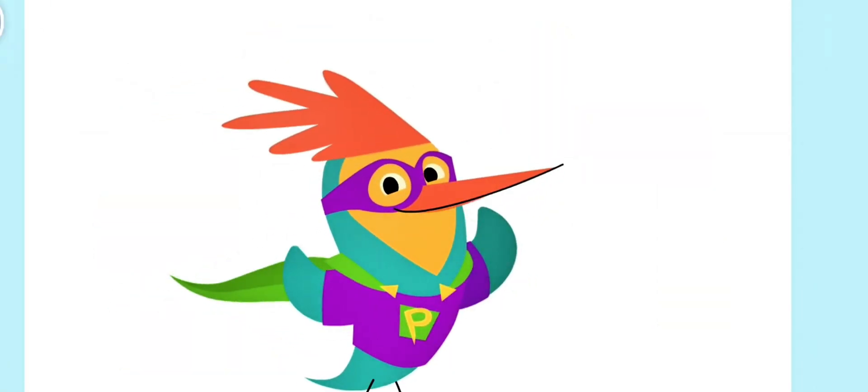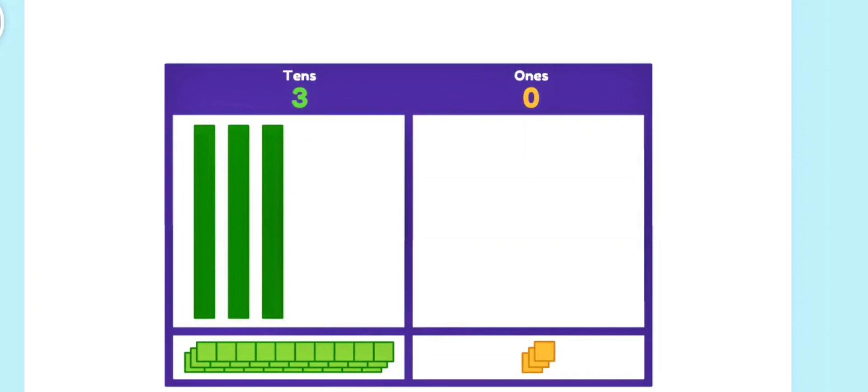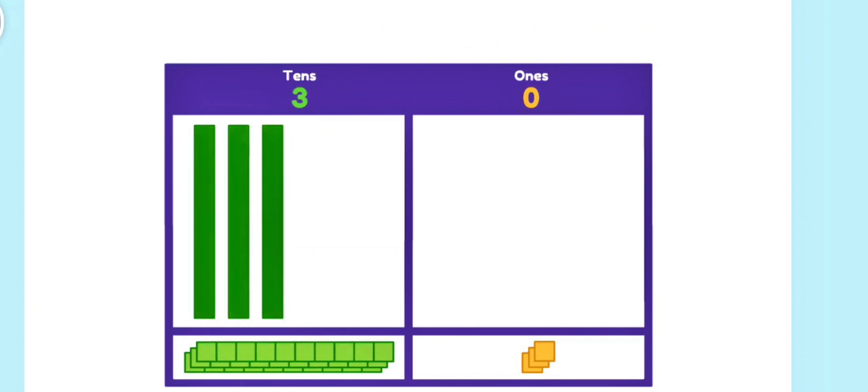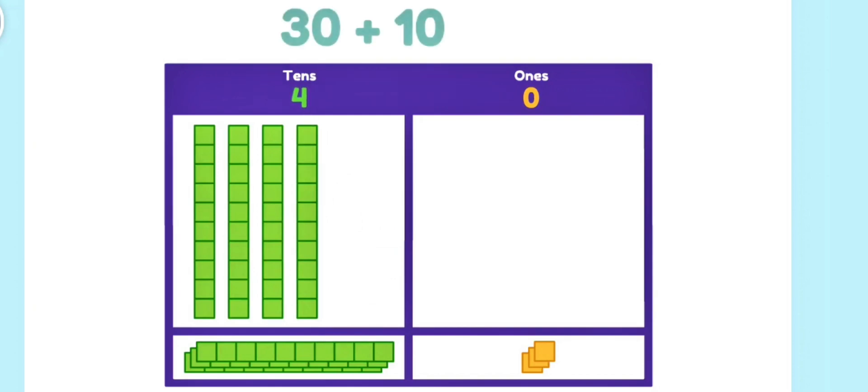Let's solve this equation! We have thirty blocks! And we are adding ten blocks! What is thirty plus ten? This is the tens place! Since we are adding one group of ten blocks to thirty, we are adding one rod to the tens place! Thirty plus ten is forty!